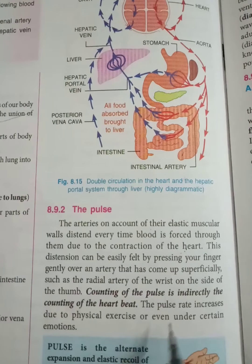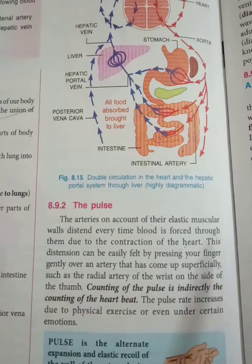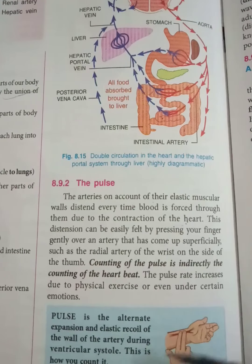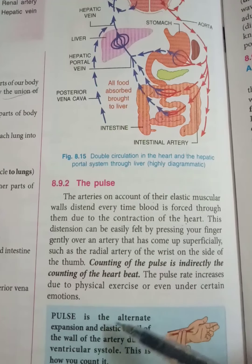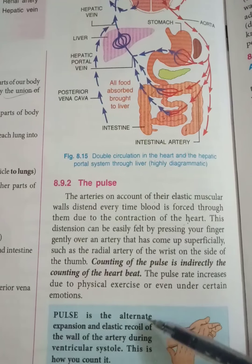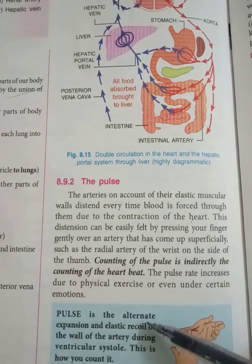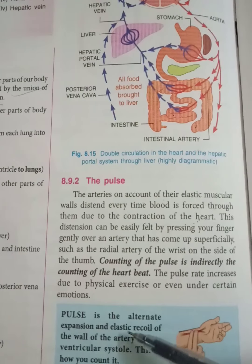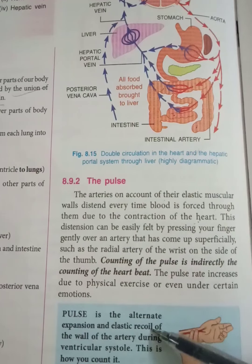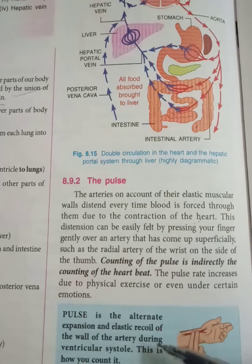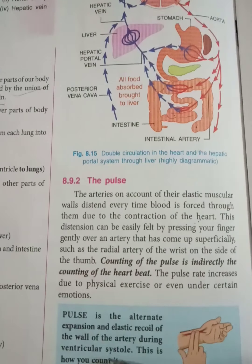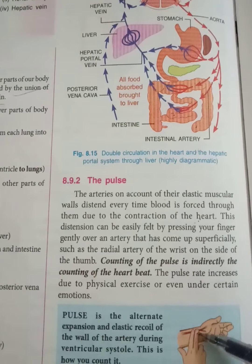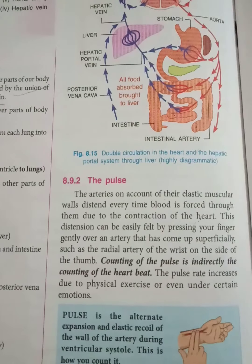Counting the pulses indirectly counts the heartbeat. Pulse increases due to physical exercise or under certain emotions. The definition of pulse is: the alternate expansion and elastic recoil of the wall of arteries due to ventricular systole.